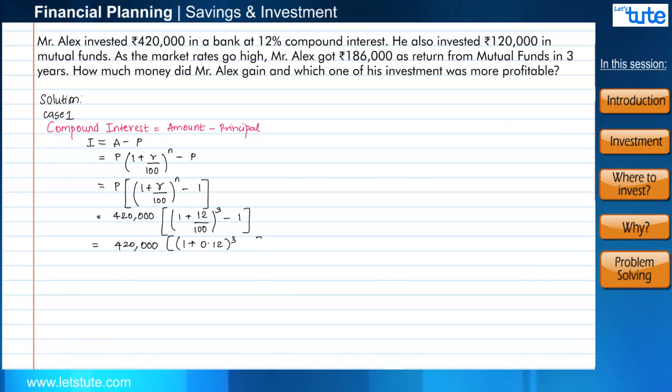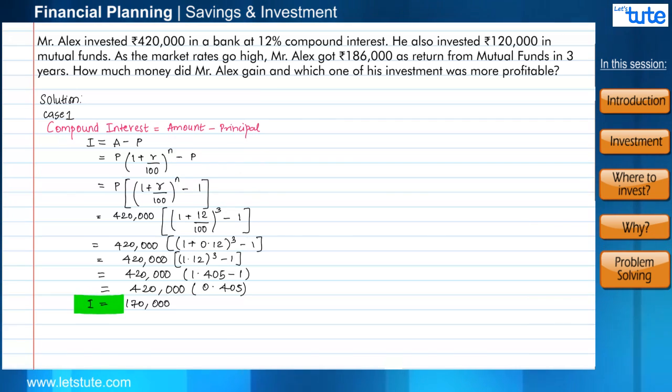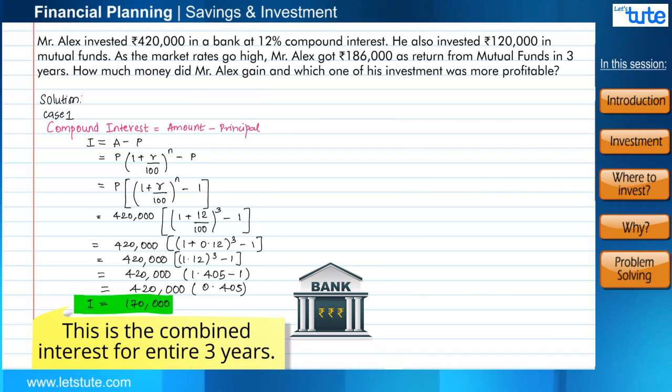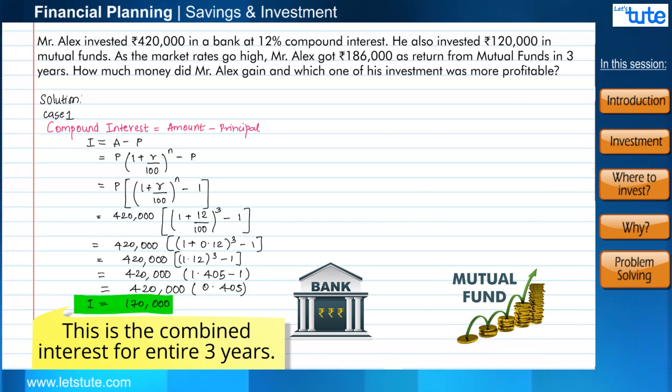On solving further, the cube of 1.12 comes to 1.404928. Here we can consider this till three digits and write it as 1.405, and here we get the compound interest as ₹170,000. This is the gain from investment made in bank. As we need to do the comparison of both investments, we will also have to calculate the percentage of interest that we got in one single year. Only then we'll be able to compare it, right?